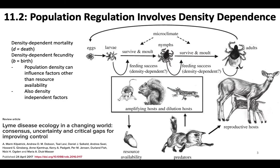The density of a population can regulate how it grows in size. There can be different types of density-dependent factors that work to regulate population growth. One is density-dependent mortality, which is death, and the other is density-dependent fecundity — birth rates regulated by the density of individuals within a given area.